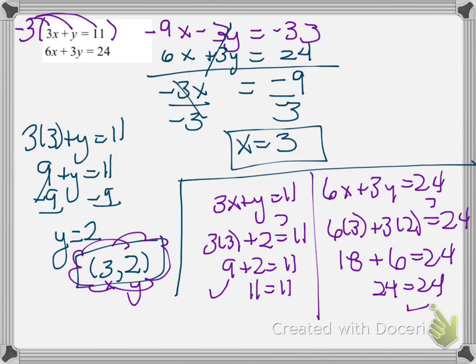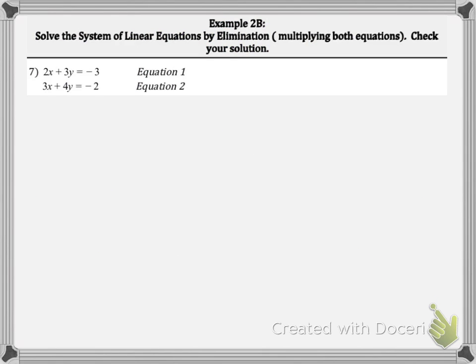Now let's look at another example. Here we had to multiply one equation to make it work. Looking at this next example, we have 2x plus 3y equals negative 3 and 3x plus 4y equals negative 2. Looking at this, I look at my x values, 2x and 3x. They're not factors of each other, so that's not quite fast. Then we look at 3y and 4y. They're not factors of each other either.